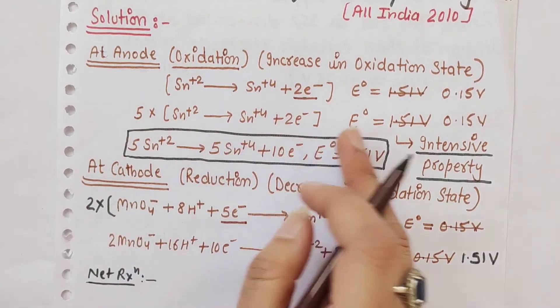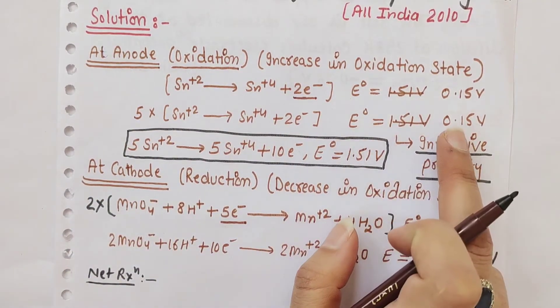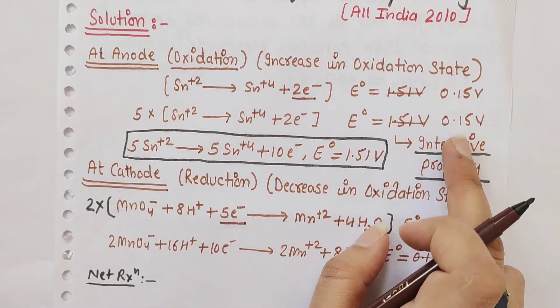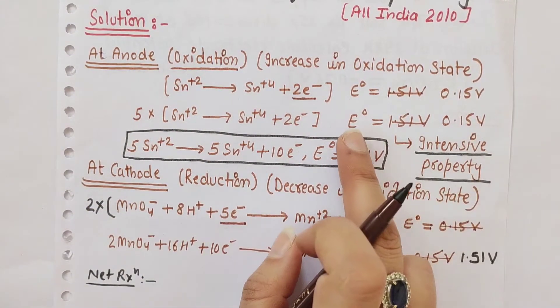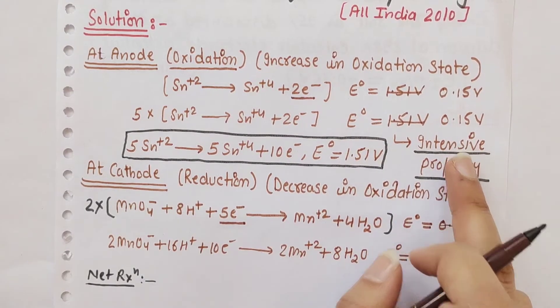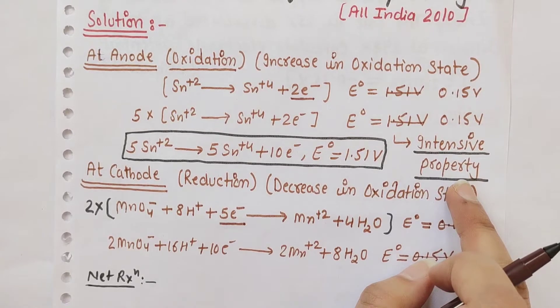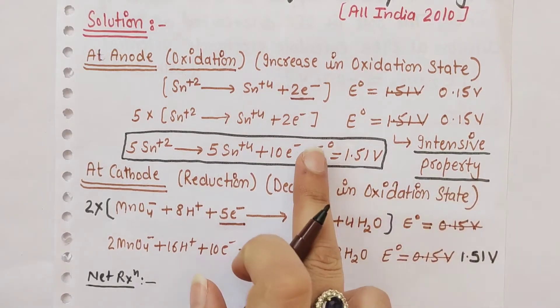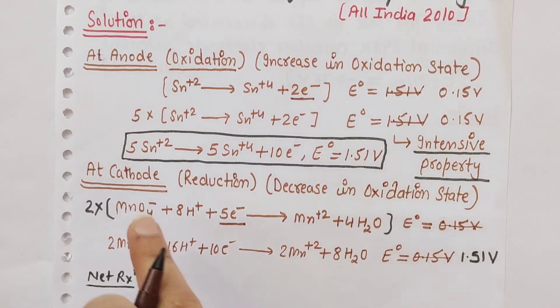Most important thing: when you multiply by 5, the electrode potential of 0.15 volt will not be affected by this multiplication. Because EMF and electrode potentials are intensive properties - they are independent of any change in the number of moles of electrons. So E° remains as it is.